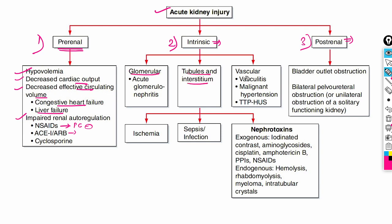Glomerular involvement is seen in acute glomerulonephritis and constitutes around 5 percent of all intrinsic causes. The most common cause of intrinsic failure is tubular involvement, which can be due to ischemia, septic infection, and nephrotoxins — either exogenous or endogenous. Vascular involvement can be due to vasculitis, malignant hypertension, and syndromes like TTP-HUS.